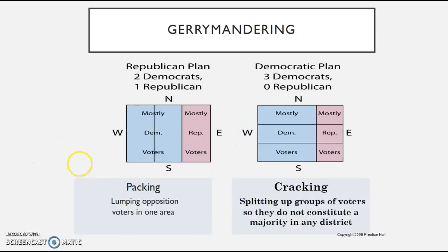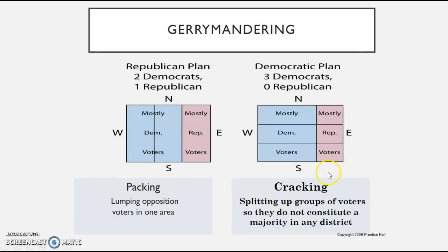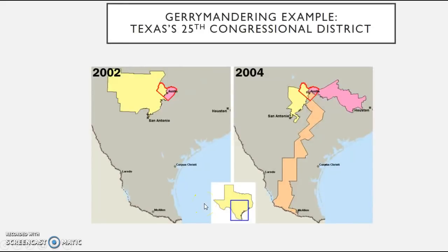With gerrymandering there are two important concepts: packing and cracking. If this were a Republican plan and a district was made up of mostly Democratic voters, you could pack Republican votes when drawing your three districts — giving Republicans at least one district. If Democrats were in power, they would try to crack the Republican voters by drawing districts that split up Republican votes — that's cracking. It depends on who's in power.